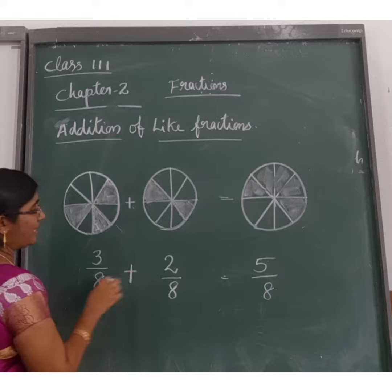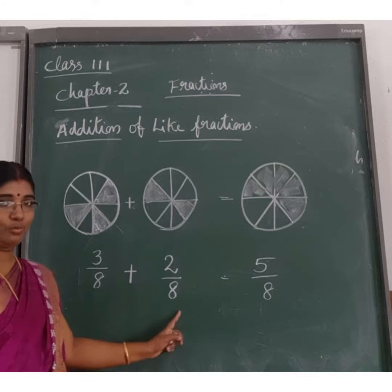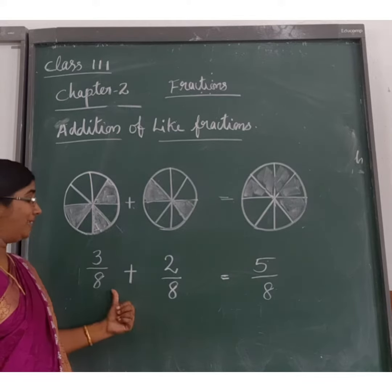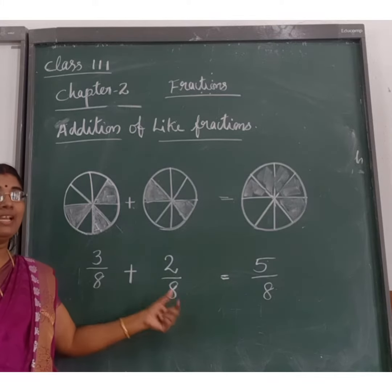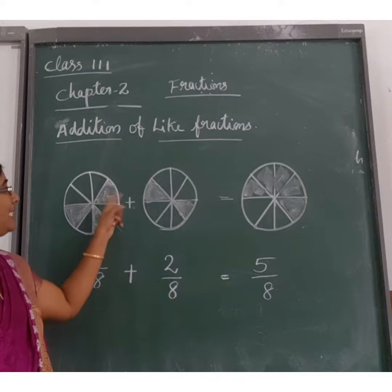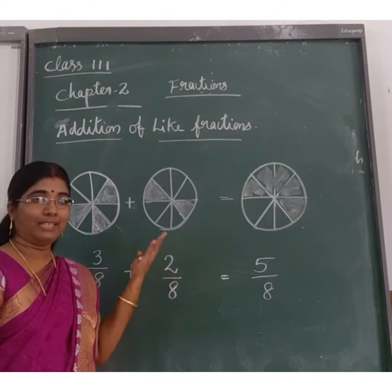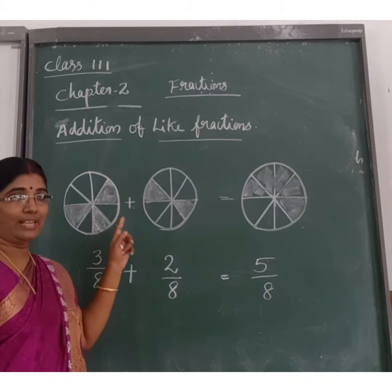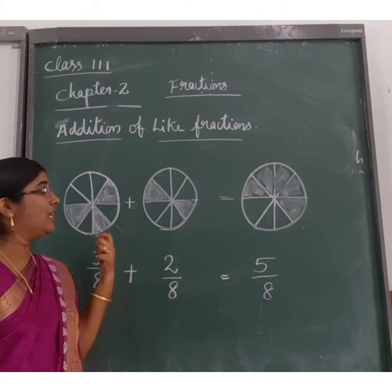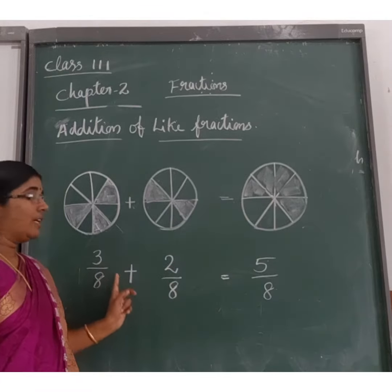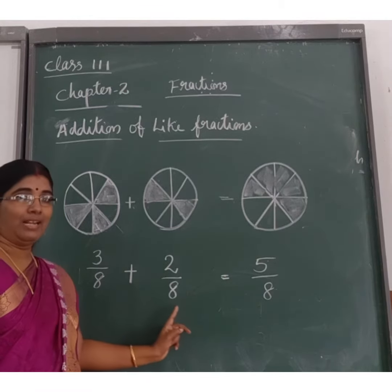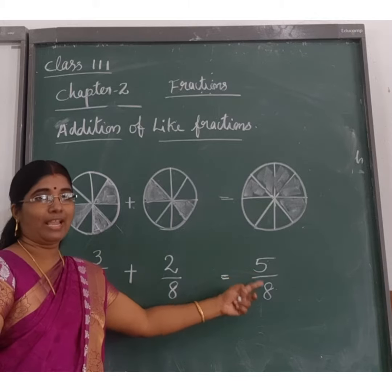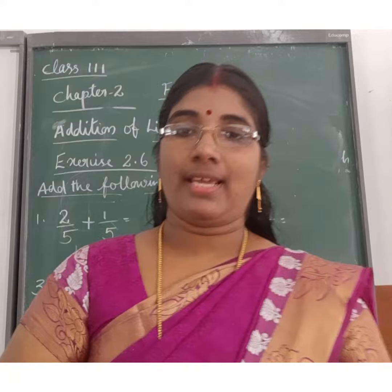So if we add 3 by 8 and 2 by 8, we will get 5 by 8. No need to add the denominators, because denominators represent the number of parts — we do not add the number of parts. We only add the numerators. So if we add like fractions, we add the numerators and write the same denominator.